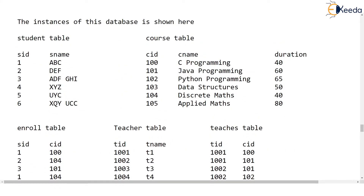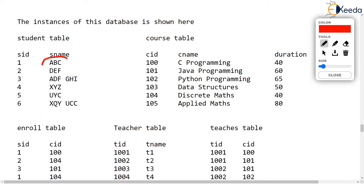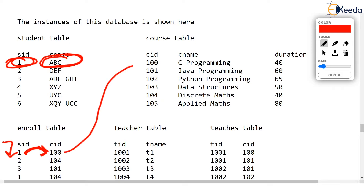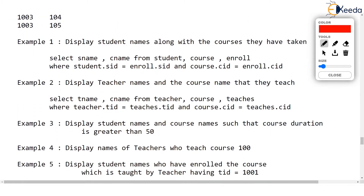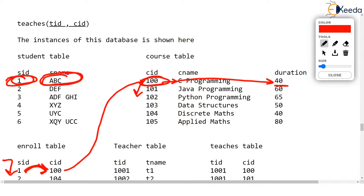We want to list student name along with the course name — but which course has this student joined? That can be understood by looking at s_id in the enroll table, which shows the student has enrolled for course 100. But we want the course name. Looking at the course table, course 100 has a duration of 40. We want courses with duration greater than 50, so this one won't be displayed — C Programming has duration of only 40.